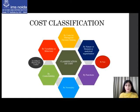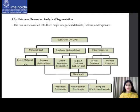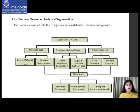Let's discuss the first classification — by nature, element, or analytical segmentation. You can find the elements of cost in my previous video where I discussed them in detail. By this classification, we can divide cost into three types: material cost, labor cost (also called employee cost), and other expenses. Anything which cannot be allocated to the first two categories is attributable to other expenses.